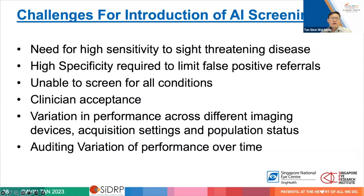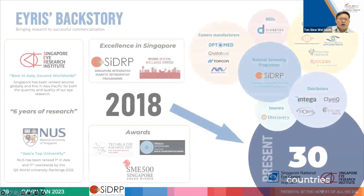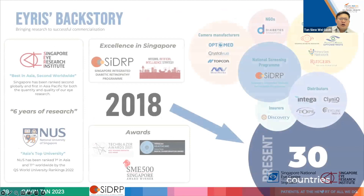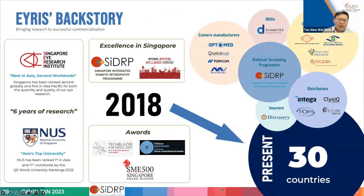The implementation challenges we learned: you still need very high sensitivity especially for the worst forms of disease where missing them has medico-legal and morbidity consequences; you still need high specificity to avoid overwhelming the system with false positive referrals; and AI currently can't screen for all conditions — regulatory approval for an AI claiming to screen for every condition would have a much higher bar. We had to navigate things like condition acceptance, variation of performance across settings, and auditing performance over time — all worked through the startup, which has been quite successful navigating regulation.